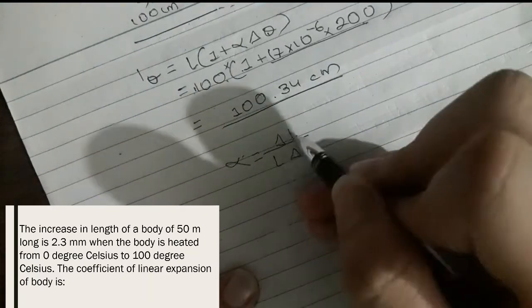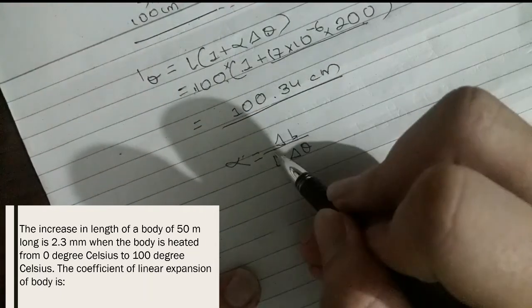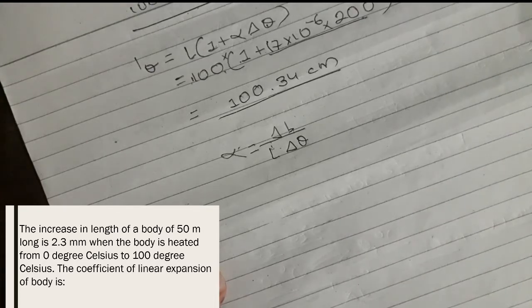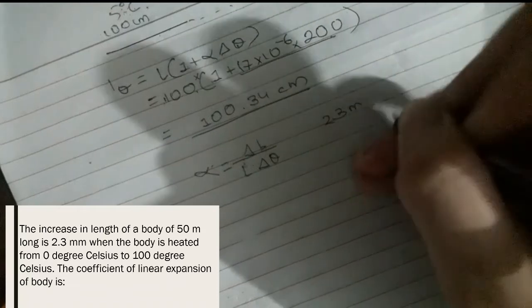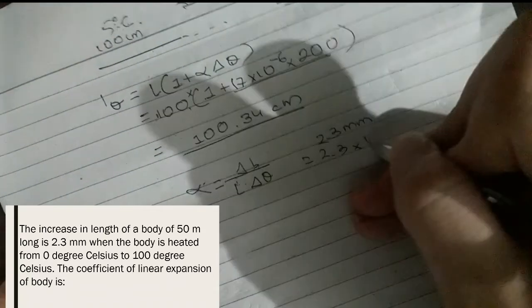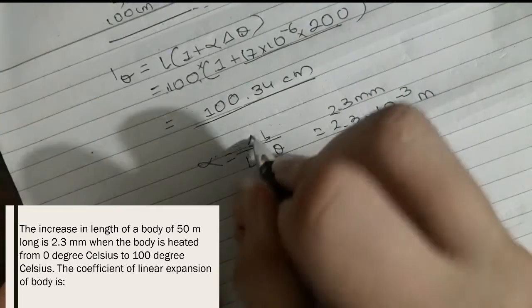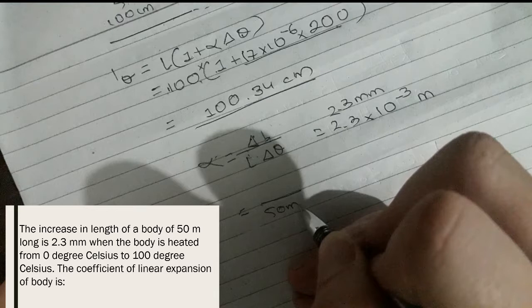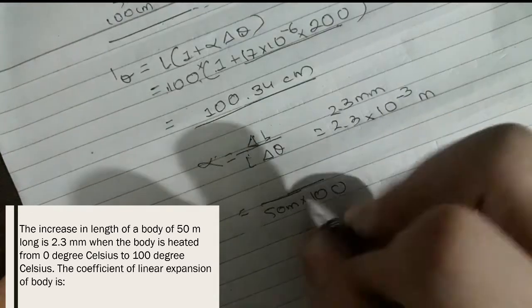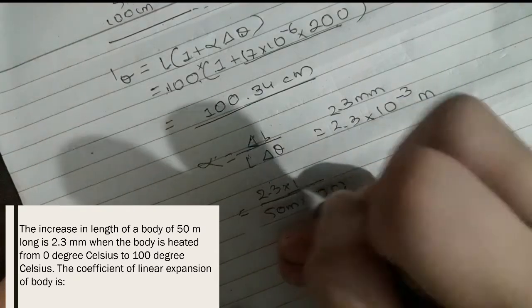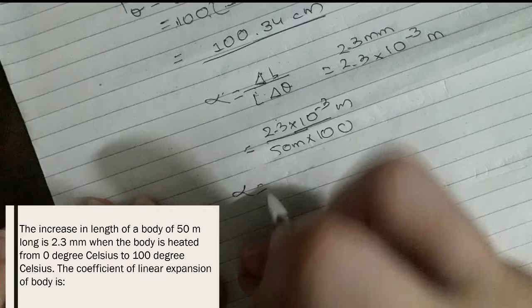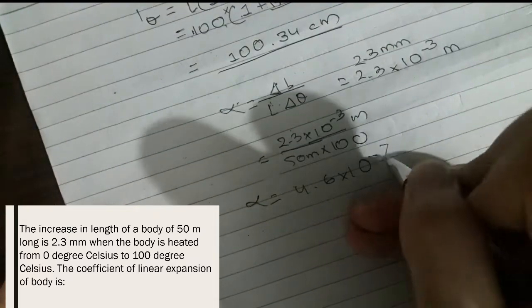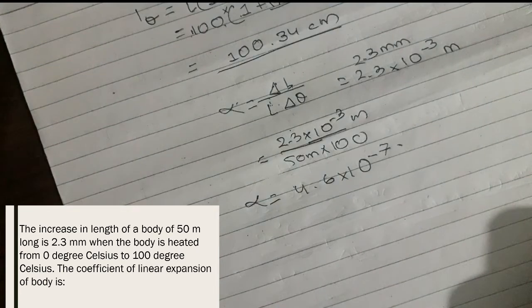Here: delta-L = 2.3 mm = 2.3 × 10⁻³ m, original length L = 50 m, and change in temperature = 100 degrees. So alpha = (2.3 × 10⁻³) / (50 × 100). The correct answer is 4.6 × 10⁻⁷ per degree Celsius, which is option C.